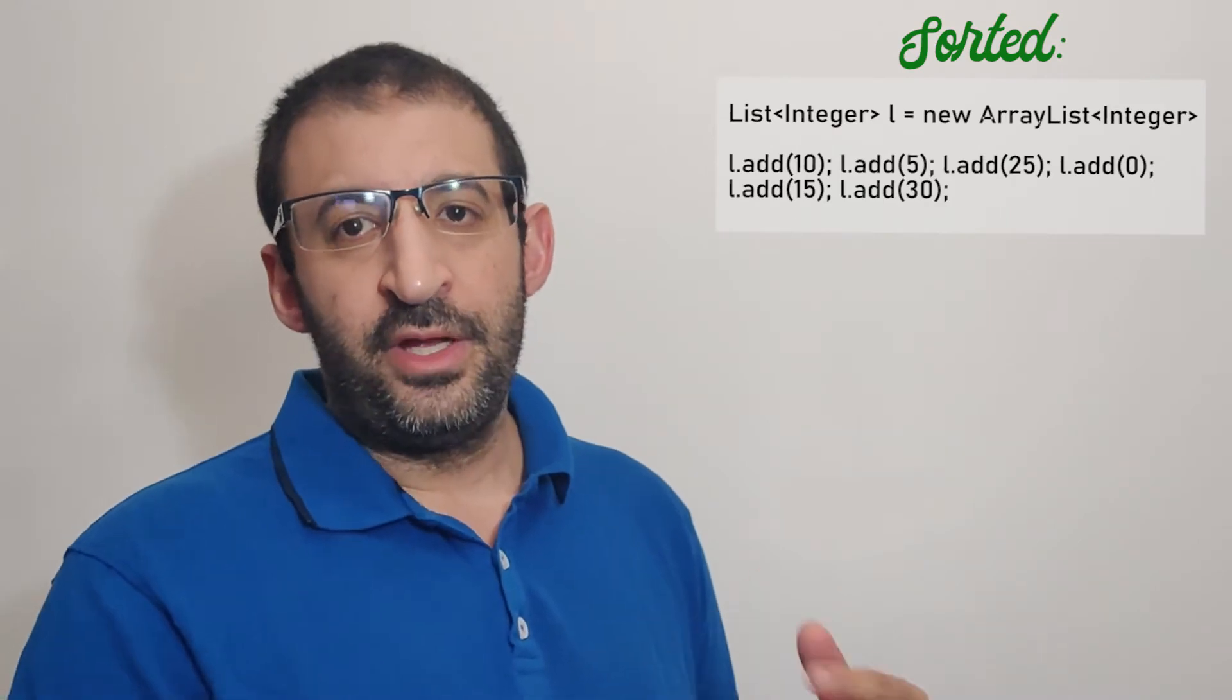Now I'll make an example. The first example is to sort a list of integers with the default order. So for example, here is my list: List<Integer> list1 = new ArrayList<Integer>, and we add the values 10, 5, 25, 0, 15, 30.